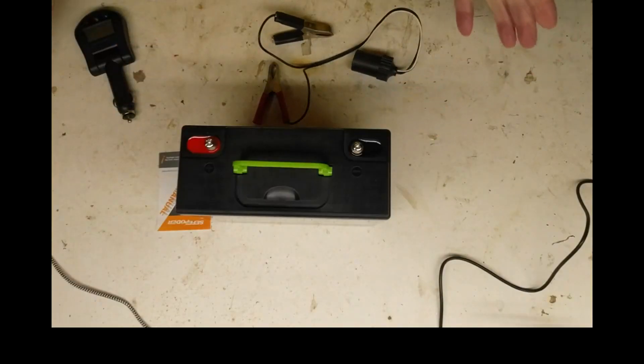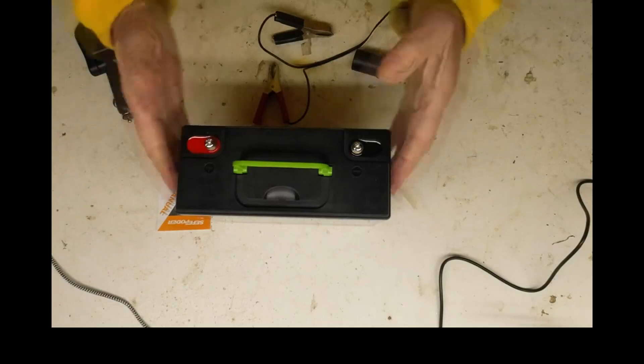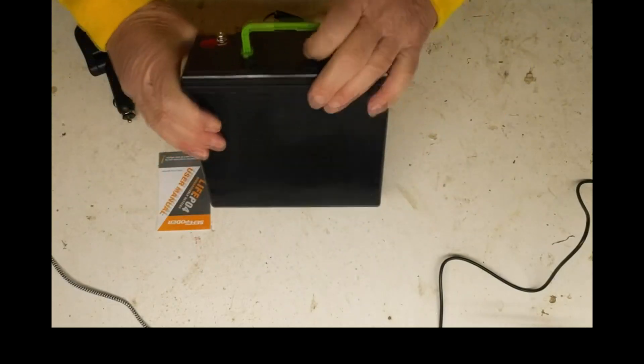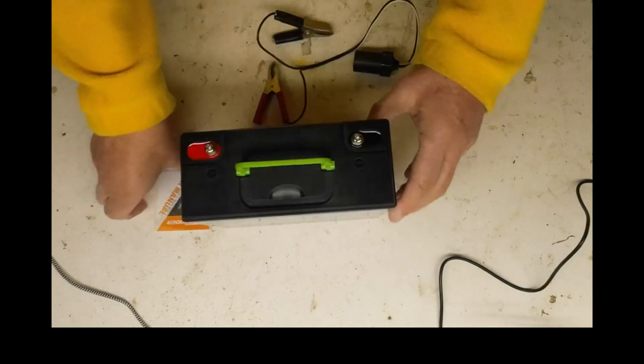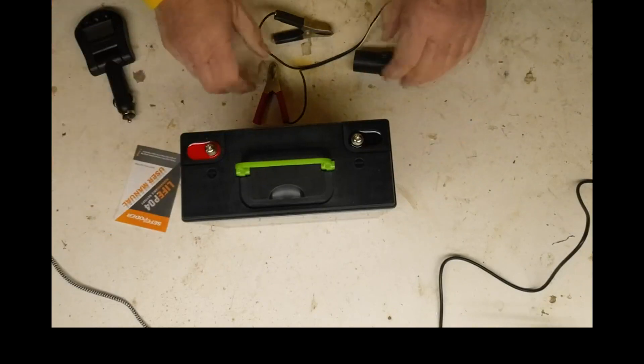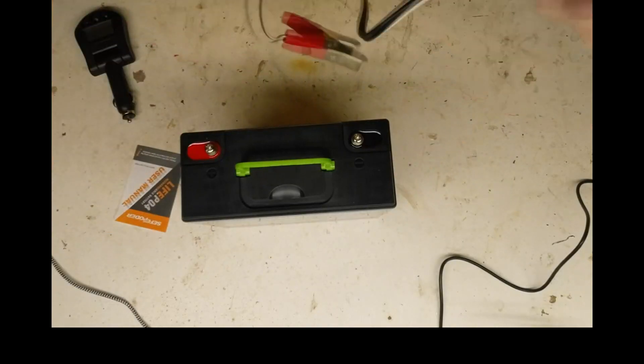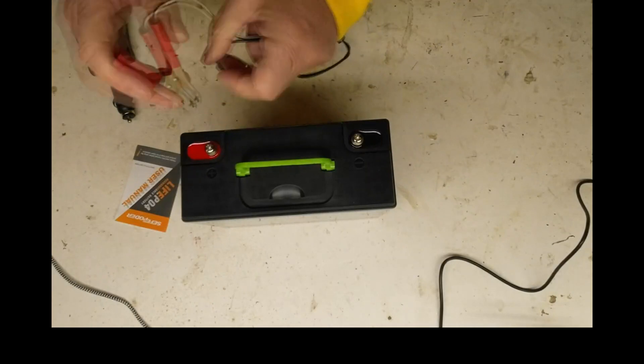So the only way I was able to figure out how to check the charge level on this battery, since it doesn't have any indicators that I can see on it, and there's nothing in the manual about how to check it, was to get out a unit that's supposed to be hooked up to a battery.